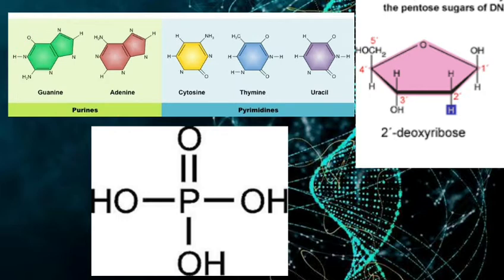...is called two-deoxyribose, two-deoxyribose because the OH which is present on the second carbon molecule is replaced by hydrogen. DNA has four different types of nitrogen bases: pyrimidines and purines. These four different types of nitrogen bases are adenine, guanine, cytosine, and thymine.